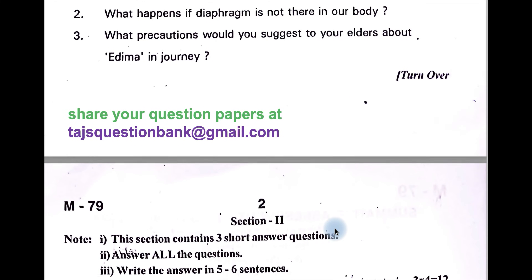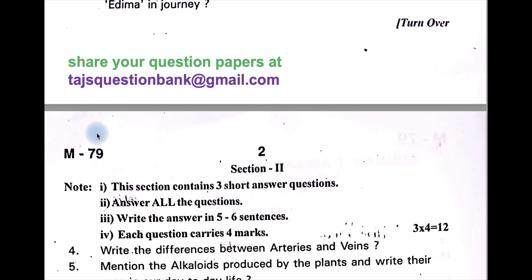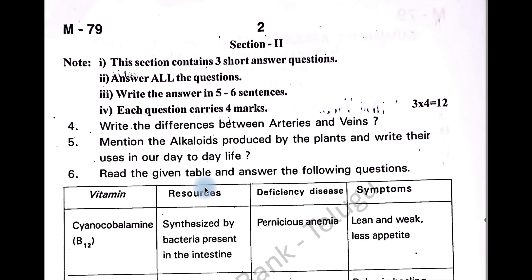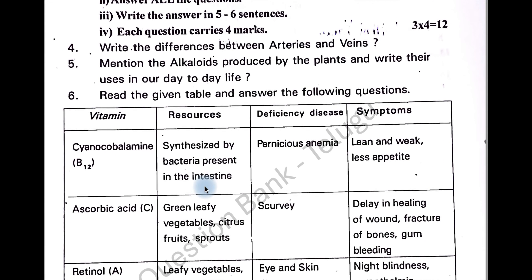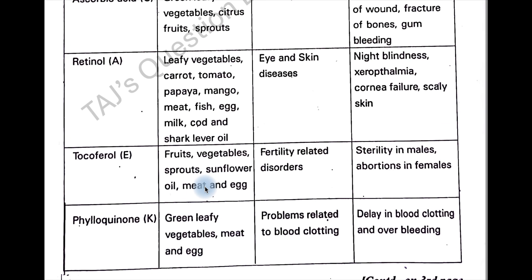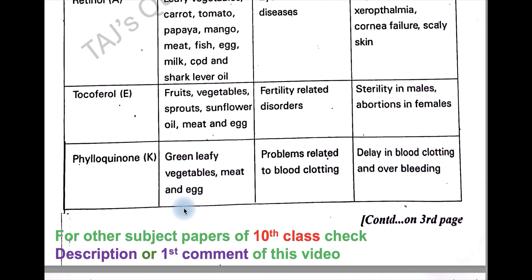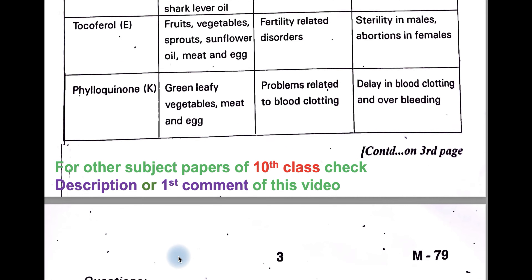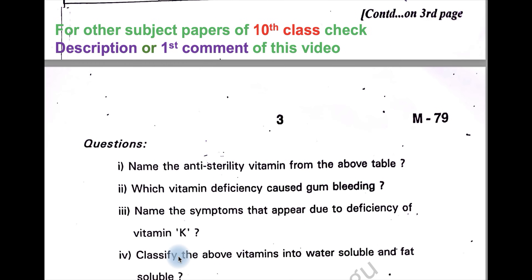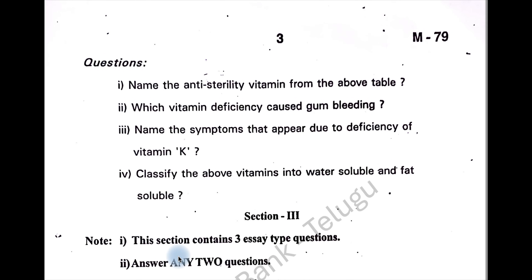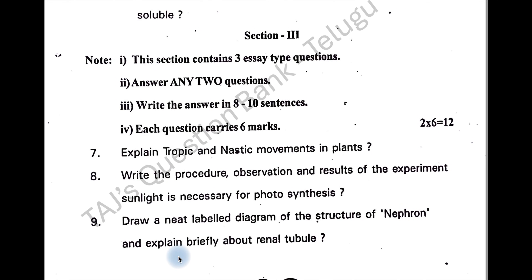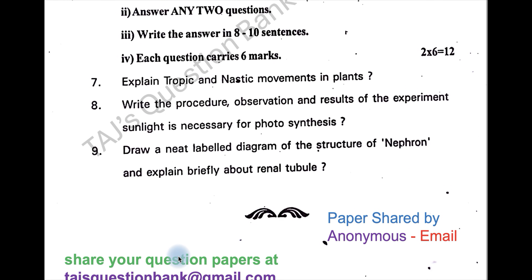This is the 10th class Biological Science paper, set M79. Different papers can be found across every district. You can find this question paper and links to all Telangana 10th class and AP 10th class previous year question papers. Click on the link and watch the desired subject.